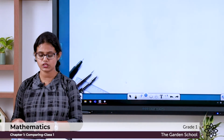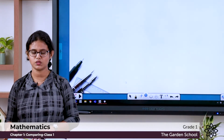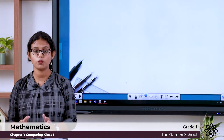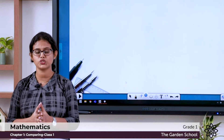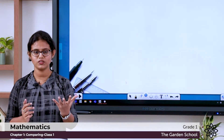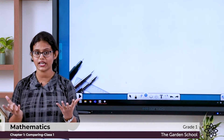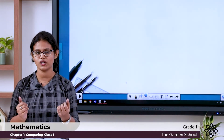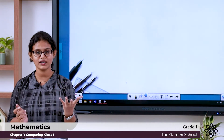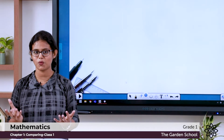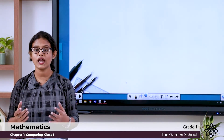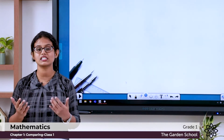The first chapter is Comparing. Have you heard the word comparing before? When you see objects, you can see objects with different sizes. Have you seen a football? If you take a football, it is big. Have you seen a cricket ball? It is small. So both these balls have different sizes. Football is bigger and cricket ball is smaller. We can say football is bigger than cricket ball.